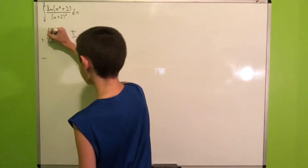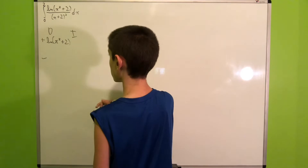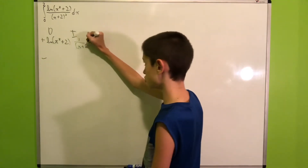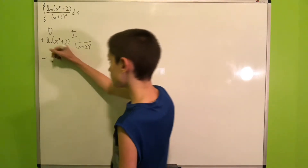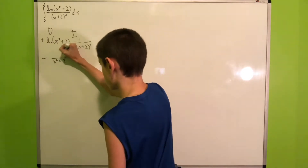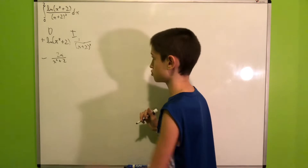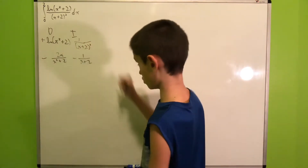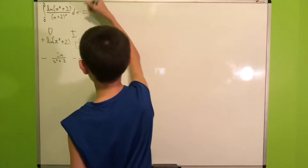We will differentiate ln(x² + 2) and integrate 1/(x + 2)². For the derivative, the denominator will be x² + 2 and then by the chain rule we have 2x. And here we have negative 1 over (x + 2) — that's the power rule. And now we can just do the usual integration by parts.